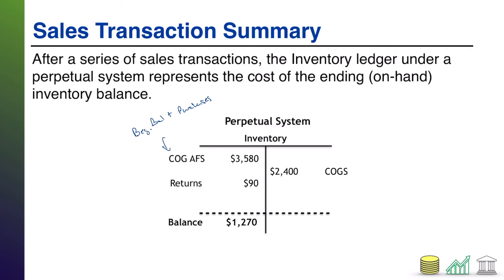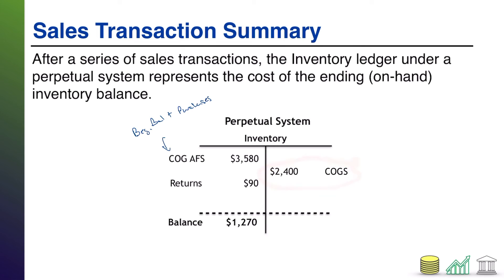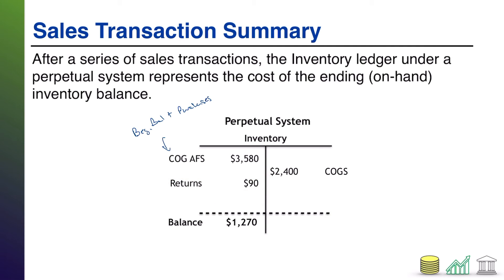From there, as we make sales transactions, inventory is adjusted with each transaction. Every time you make a sale, you lower inventory by the cost of goods sold — the value of the goods you have now sold to the customer. If the customer subsequently takes a discount or returns goods, you put that back into inventory, assuming the goods are not damaged.